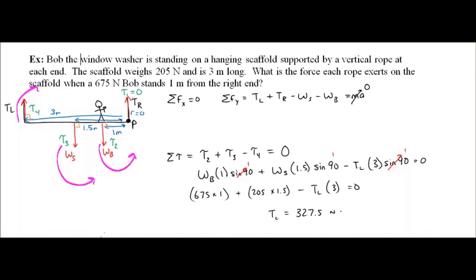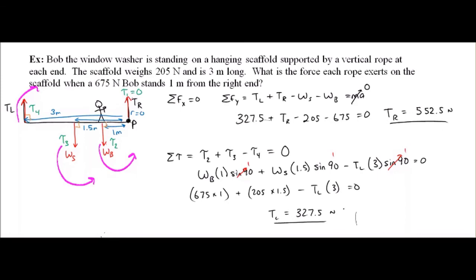Now that we know the tension on the left, we can come back to our force equation: 327.5 plus tension on the right minus 205 minus 675 equals zero. Calculating that out, you get the tension on the right equals 552.5 Newtons. That makes sense - the tension on the right is bigger than the tension on the left because Bob is standing closer to that end. Hopefully this gives you a good understanding of how to solve an equilibrium problem. We will go through more examples when you get back to class.